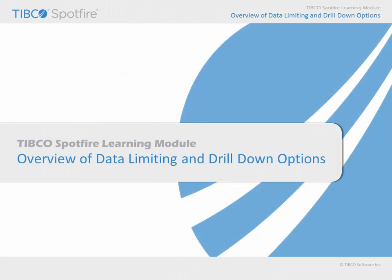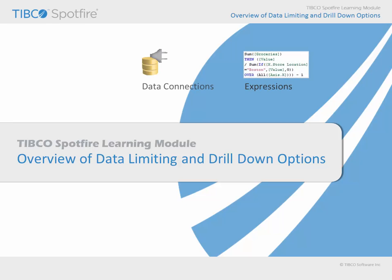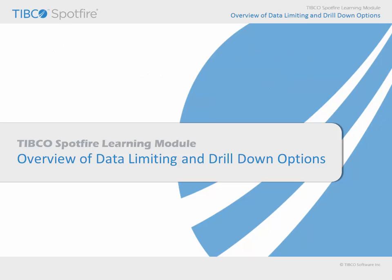In this learning module, we will take a sweeping look at the ways in which you can interactively limit data displayed in Spotfire visualizations and drill down to get more information about items of interest. Although expressions, in-database data connections, and load-on-demand data tables may also be configured to achieve data-limiting goals, our primary focus in this module will be upon the interactive features of marking and filtering.